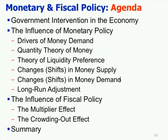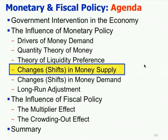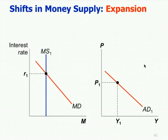That is the theory of liquidity preference — money demand, money supply, and equilibrium. Now we can talk about the influence of monetary policy: what about shifts in money supply, which is monetary policy? Let's see how that happens. Monetary policy is about changing the money supply with the intention of changing the interest rate, which ultimately has the intention of influencing the economy by influencing aggregate demand.